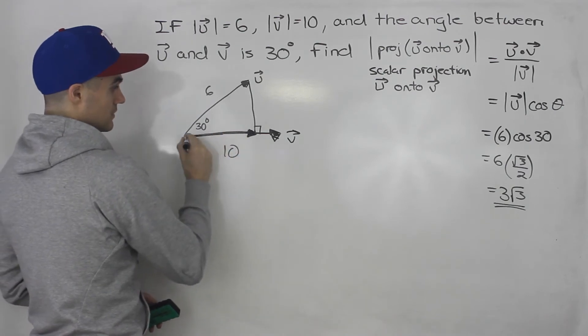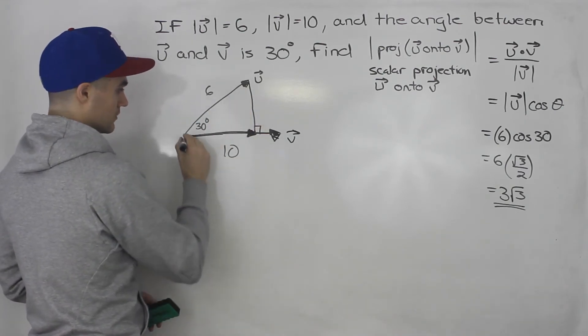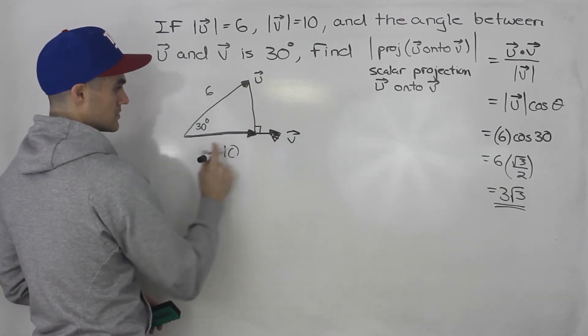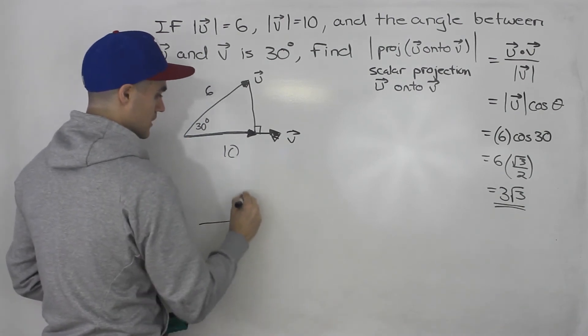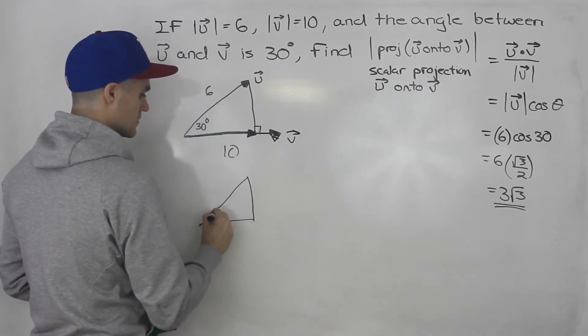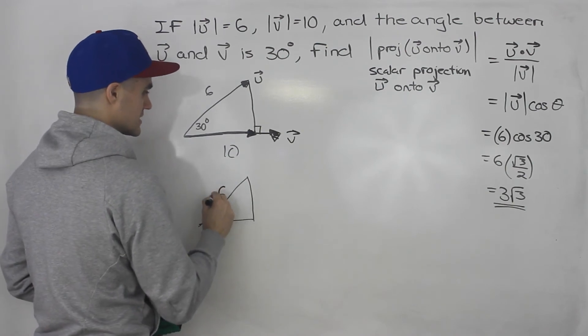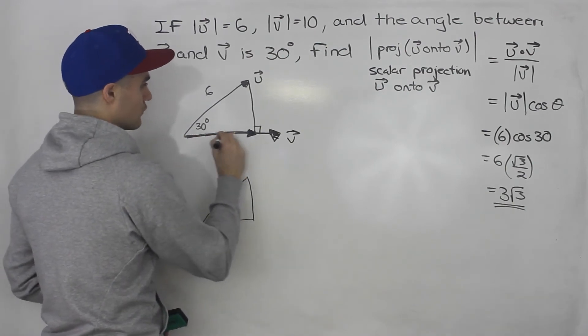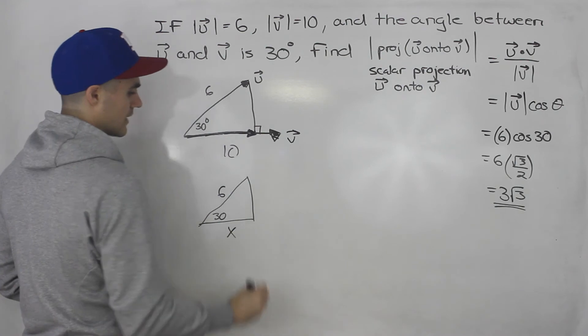So if you think about it, notice how we have a right angle triangle here. If we ignore this part, so writing this out again like this. So this is 30. This is 6. And we're solving for this magnitude. So let's call it x.